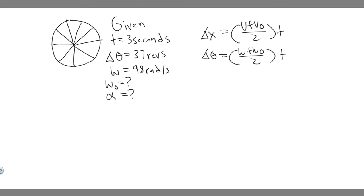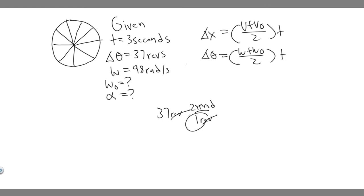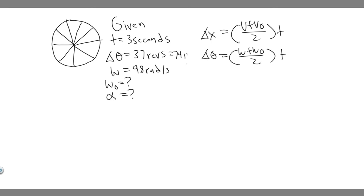Keep in mind that delta theta needs to be in radians, since omega is in radians per second and time is in seconds. Converting 37 revolutions: one revolution equals 2π radians, so the revolutions cancel and we multiply 37 times 2π. That gives us 74π radians. So the change in theta equals 74π radians.